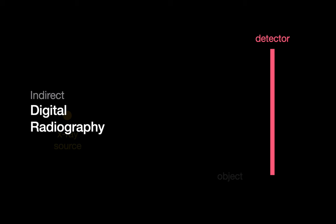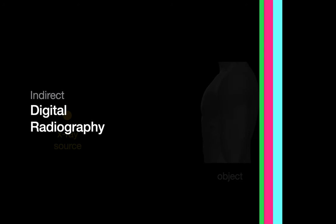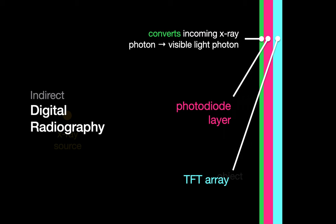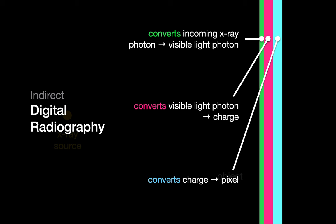The third and newest strategy for capturing a portable chest radiograph image is digital radiography, or DR. There are two forms of DR: indirect and direct. With indirect DR, the x-ray detector panel is composed of three layers: a TFT array, a photodiode layer, and a phosphorescent crystal layer. Whenever an x-ray photon hits the phosphorescent crystal layer, the phosphorescent crystal at that spot converts the x-ray photon into a photon of visible light. The photodiode layer then immediately converts the visible light photon in that spot into an electric charge at that same spot, which the TFT layer registers as a black pixel.